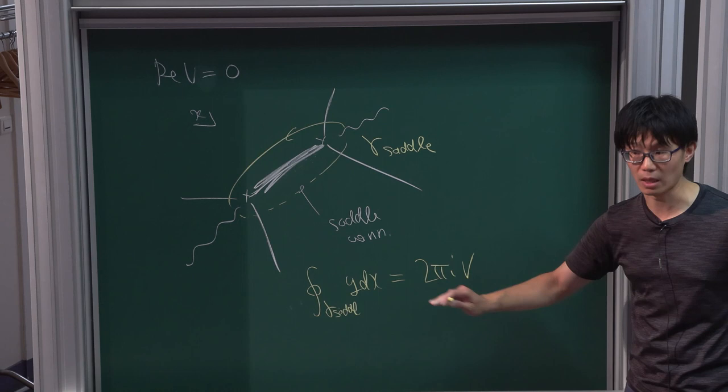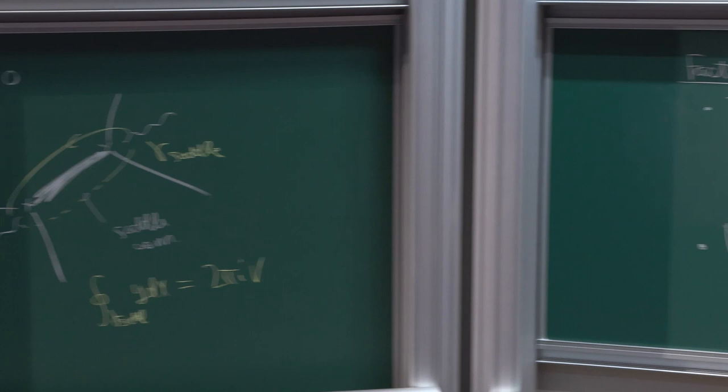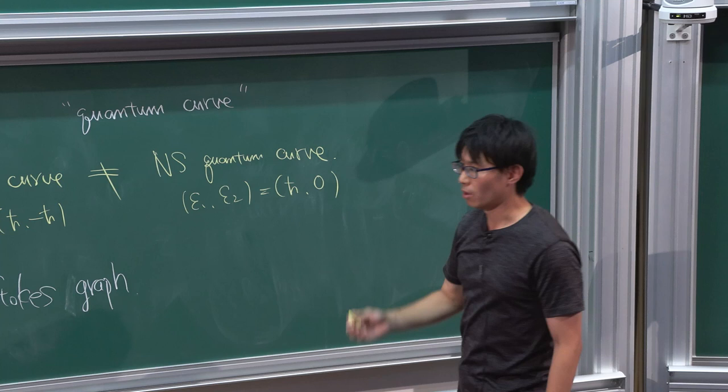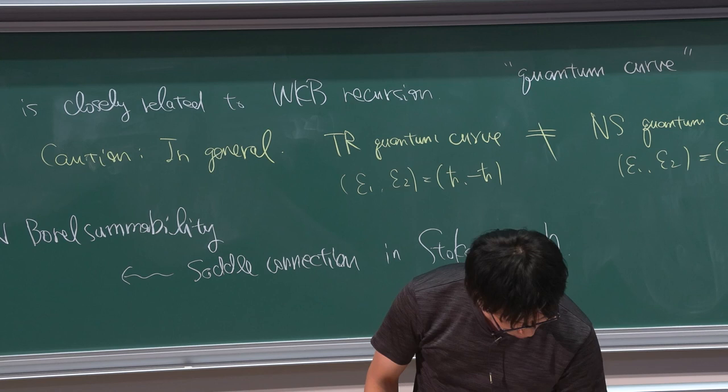The appearance of the subtle connection implies that this must have zero imaginary part, so these points lie on the positive real axis. This is related to the non-Borel summability. From this viewpoint, the Borel singularities come from the subtle connection and the period of Y dx along it.